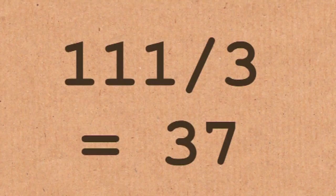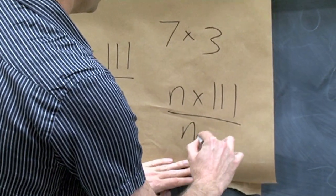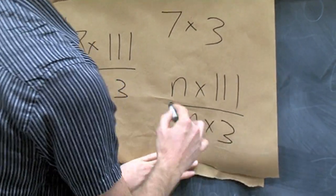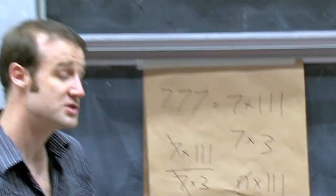So every single time you do it, it's whatever the number is times 111 divided by whatever the number is times 3. These cancel out. It's always 111 divided by 3, which equals 37.